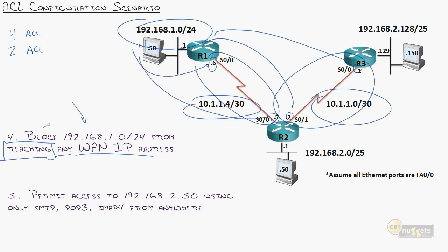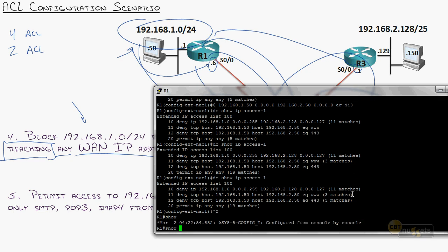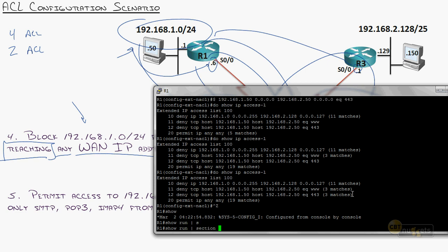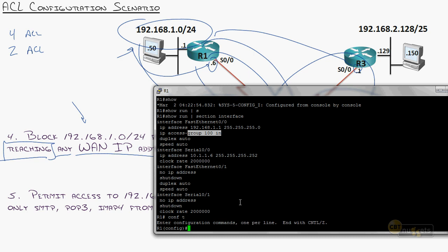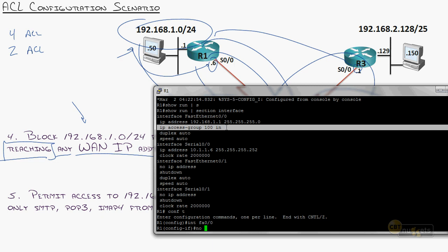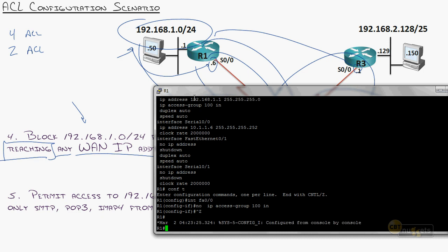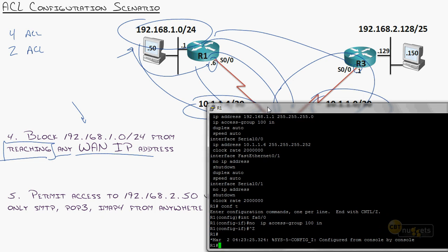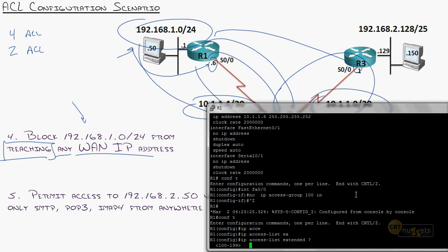I'll do a show run section interface to see what's applied. There's one on FastEthernet 0/0. I'll do interface FA0/0, no IP access-group 100 in. The 'section' command is pretty nice — you can see just those sections of the configuration. Now let's set up the new access list. Using IP access-list extended, I'll name it NO_WAN.